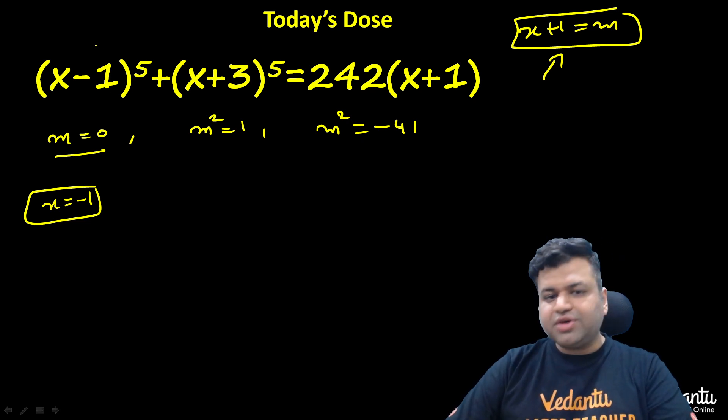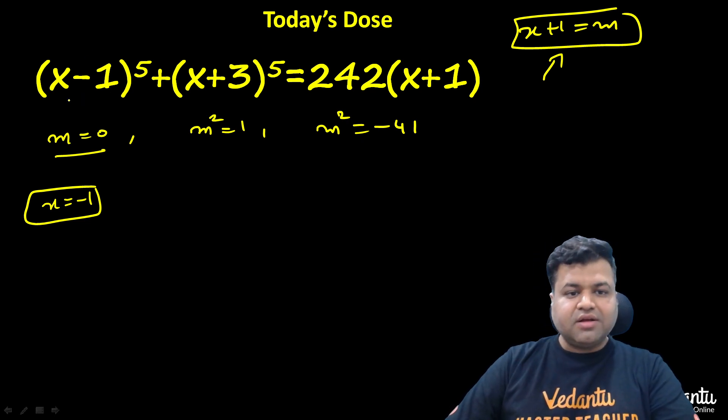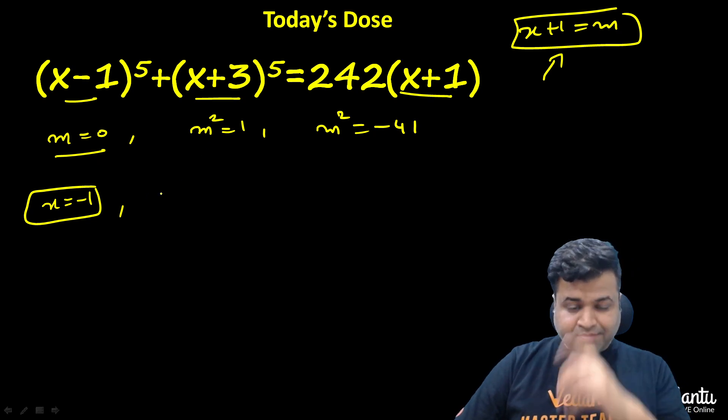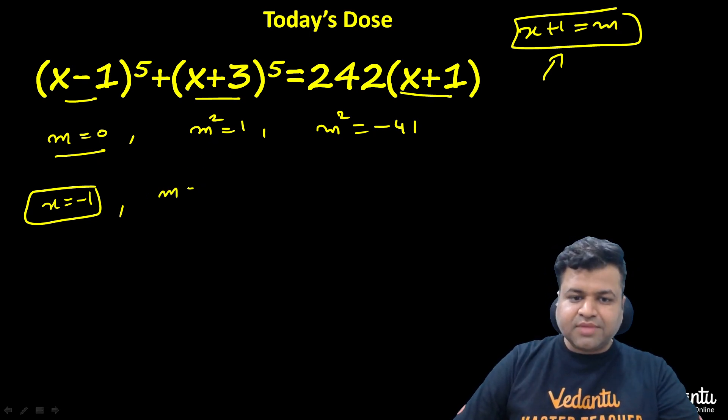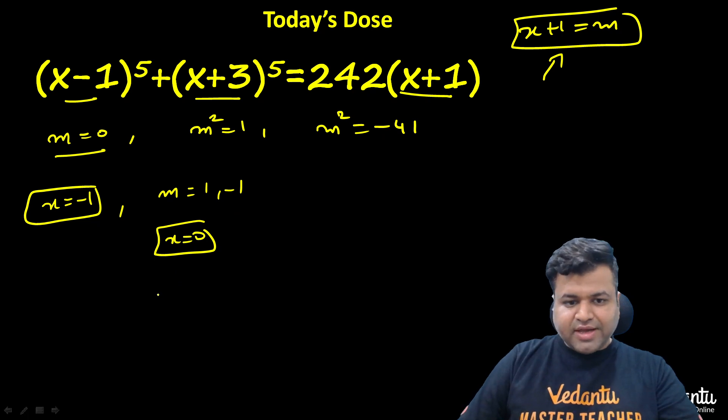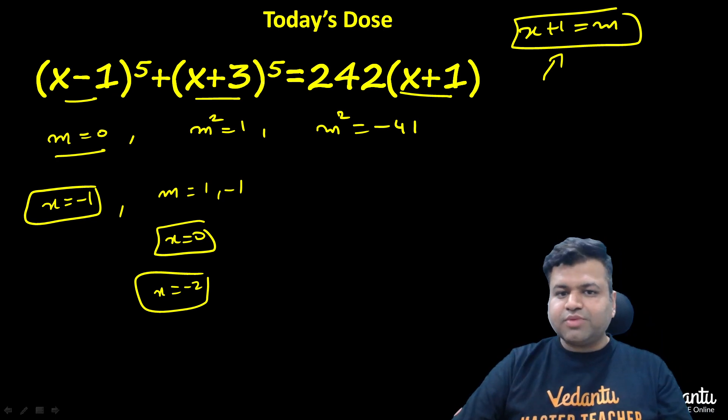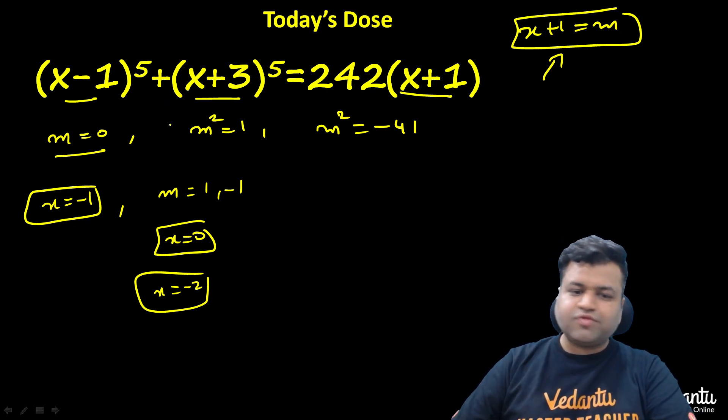Another one: we get m^2 = 1. That means m can be either +1 or -1. If m is 1, then x will be 0. If m is -1, then x will be -2. So these are two more solutions for this question. You can check if x is 0: this is -1 + 3^5, which is 243, and this is 242. So 243 - 1, which is 242. This is a perfect solution.